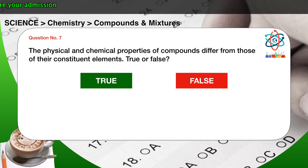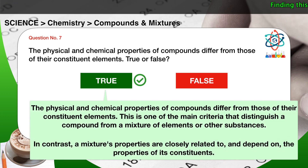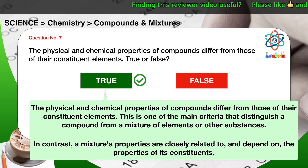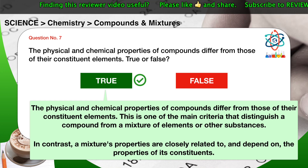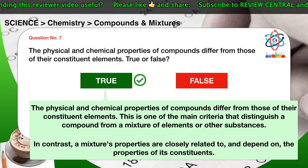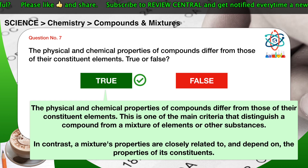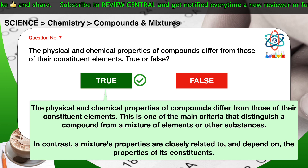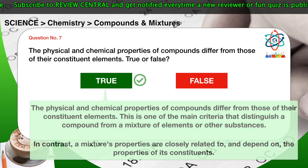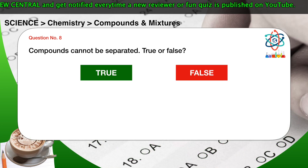Question number seven: the physical and chemical properties of compounds differ from those of their constituent elements — true or false? The correct answer is true. This is one of the main criteria that distinguish a compound from a mixture of elements or other substances. In contrast, a mixture's properties are closely related to and depend on the properties of its constituents.